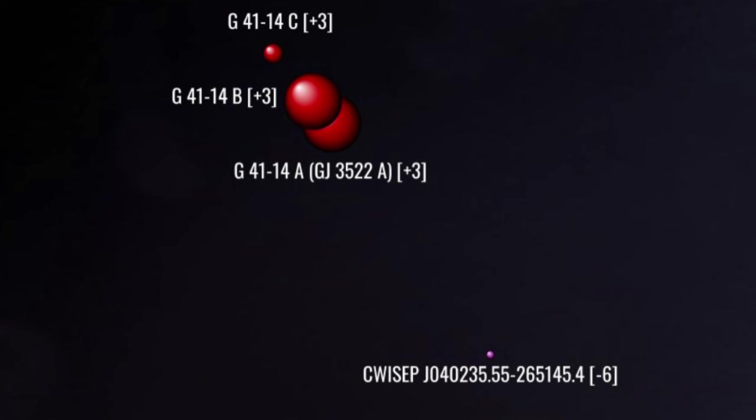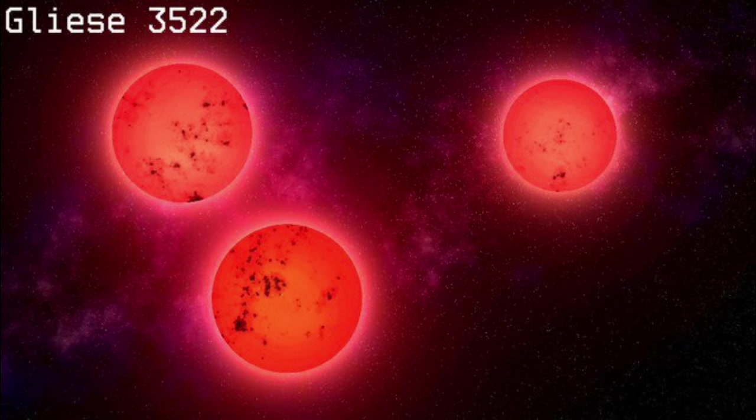West and 9 parsec north, we arrive at the triple red dwarf system, Gliese 3522. The system comprises a tight binary that completes one orbit every 7.6 days, and a smaller companion, which orbits the pair every 5.7 years. The largest is about a quarter of the mass and radius of the Sun. Like many red dwarfs, it has erupted in X-ray flares.